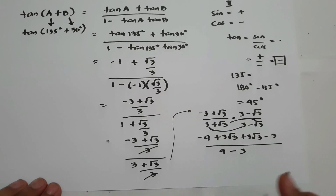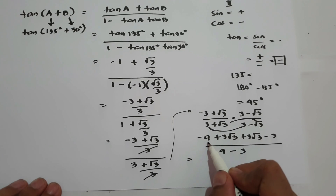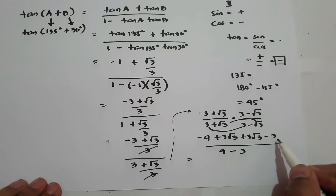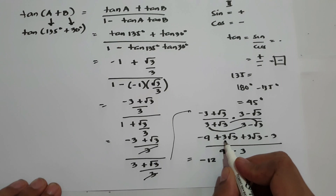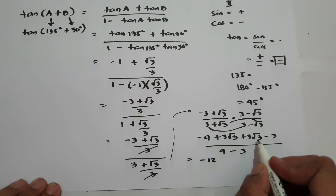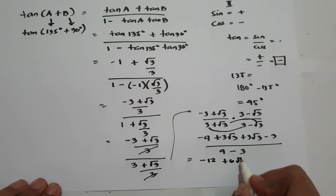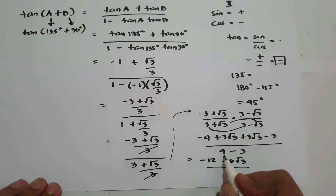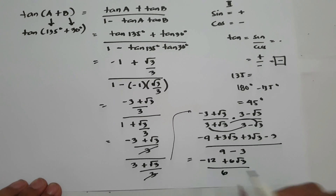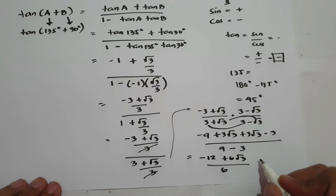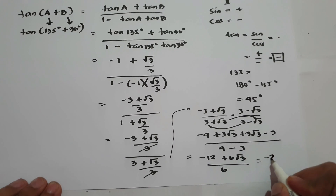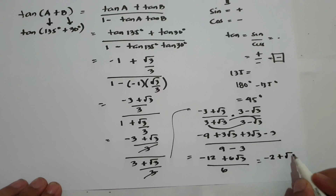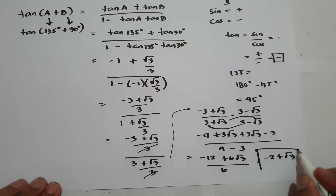Simplifying the numerator: -9 - 3 = -12, and 3√3 + 3√3 = 6√3, giving us (-12 + 6√3) / 6. Dividing: -12/6 = -2 and 6/6 = 1, so our final answer is -2 + √3.